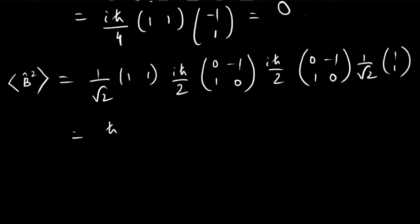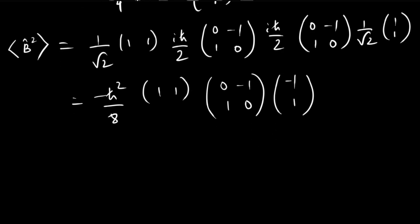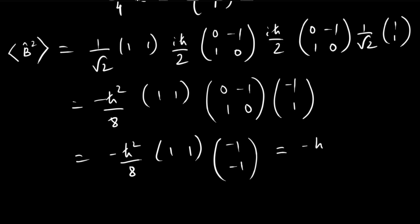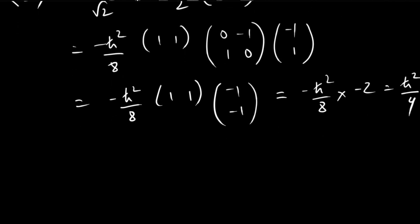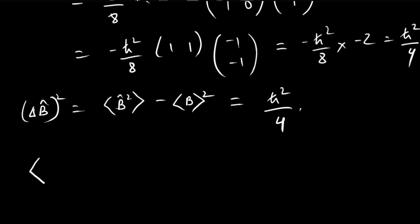Evaluating ⟨Sy²⟩: we get (ℏ²/8) with a minus sign from i², and the matrix product [[0,−1],[1,0]]·[[0,−1],[1,0]] = [[−1,0],[0,−1]], giving (ℏ²/8)(1,1)·(−1,−1) × (−1) = ℏ²/4. So ΔB² = ⟨B²⟩ − ⟨B⟩² = ℏ²/4 − 0 = ℏ²/4.